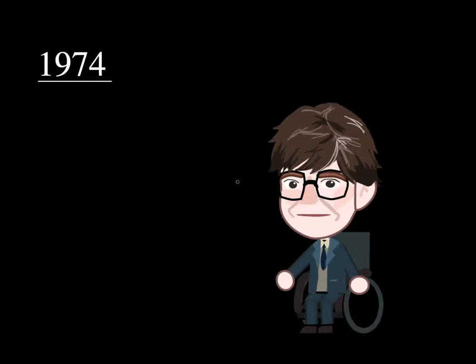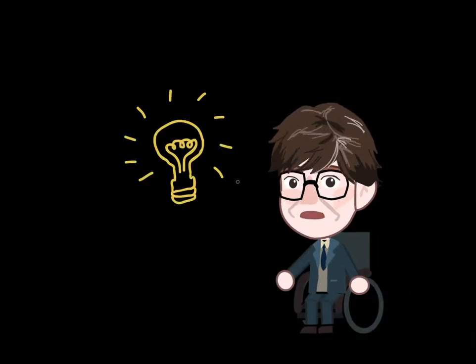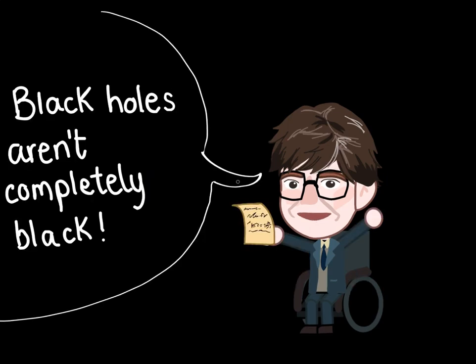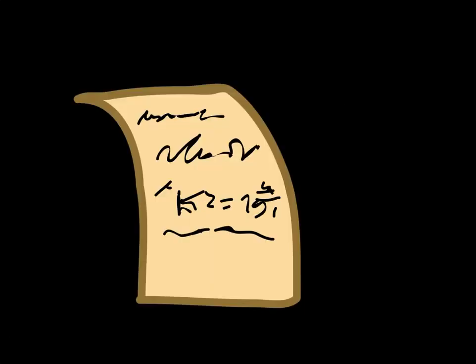In the 1970s, Professor Stephen Hawking identified a peculiar property of black holes. He published a paper in which he showed that black holes aren't completely black, and devised an equation which determined the temperature of a black hole.